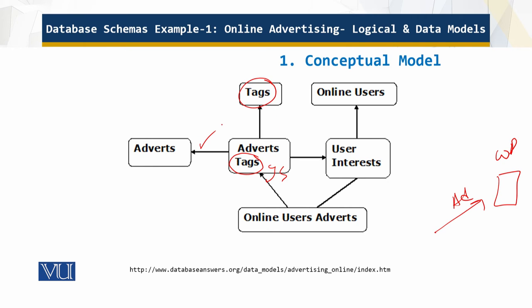Then we have online users, and user interests are of course there. Different users have different interests. And we have the online users' advertisements as well. Now let's look at the nitty-gritty details.